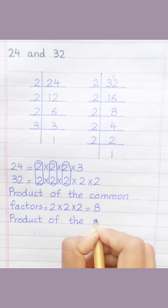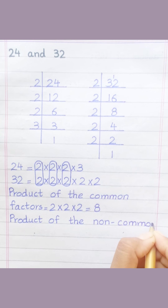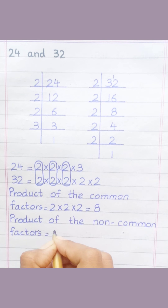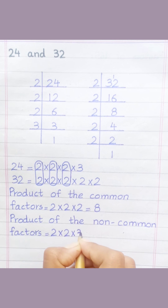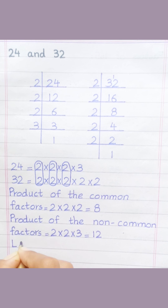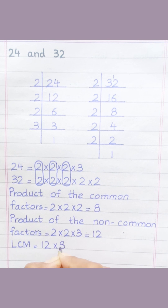Non-common factors equal two multiply two multiply three equal twelve. LCM equal twelve multiply eight equal 96.